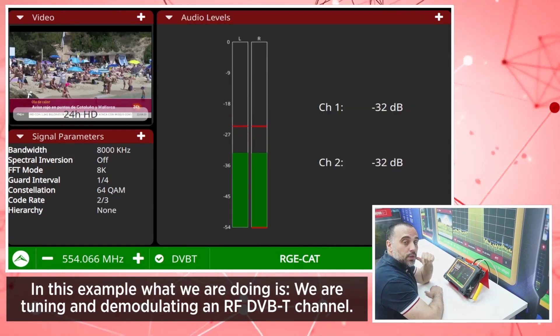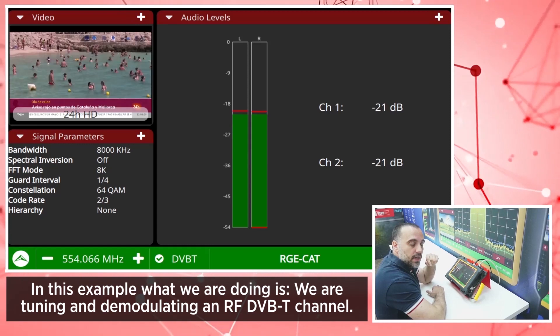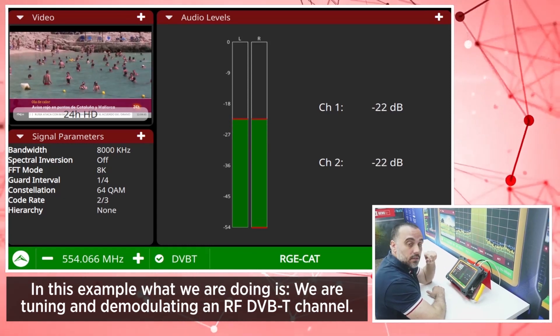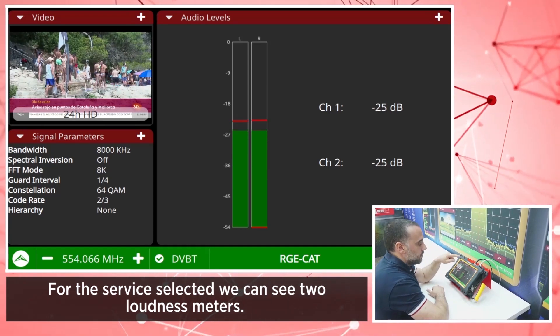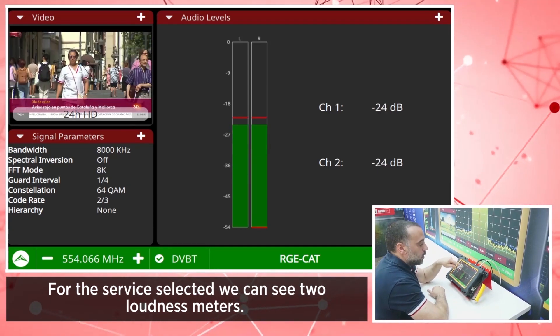In this example, we are tuning and demodulating an RF DVB-T channel. For the selected service, we can see two loudness meters.